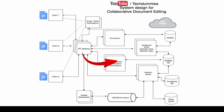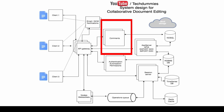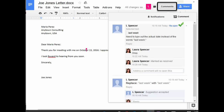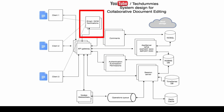Once the API gateway gets the request, it does request composition — it calls the authentication service to check if your request is authenticated. There is a separate service that handles authentication, authorization, and permissions. Another component handles comments and is directly connected to NoSQL, since we're expecting a lot of comments and also a hierarchical view, so that data is better stored in a NoSQL DB.